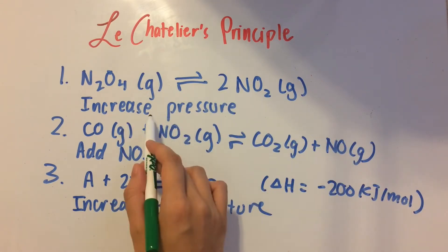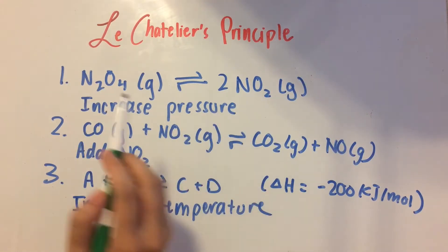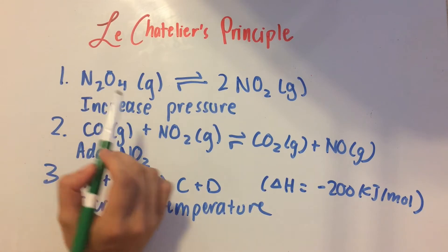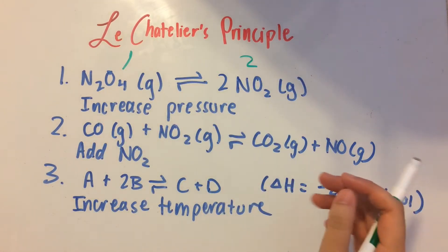And we have to say what happens when we increase the pressure. So what we do is we look at the moles of gas on each side. So over here we have 1 mole of gas. Over here we have 2 moles of gas because of this coefficient.